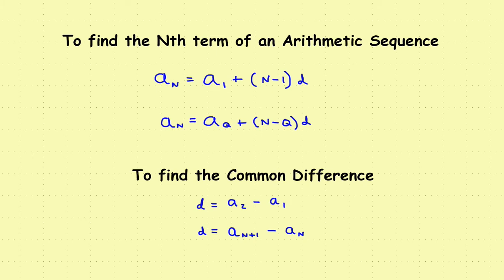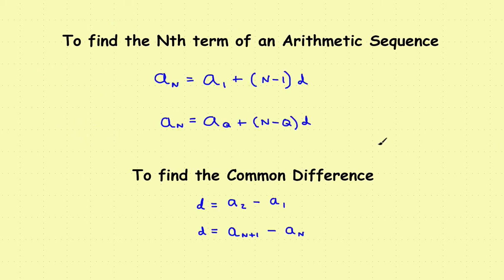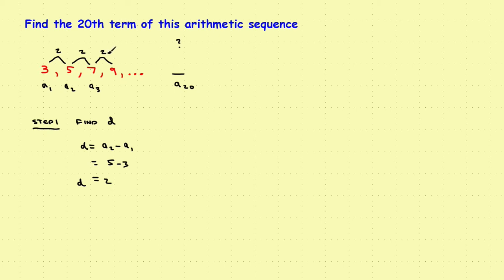Step 1: find the common difference d. Using the second term minus the first term — a_sub_2 minus a_sub_1 — we get 5 minus 3, which equals 2. The difference between consecutive terms is 2, so d = 2.